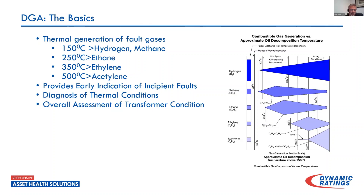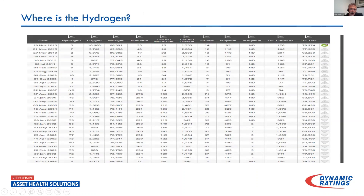Acetylene is often associated with arcing — that's generally the first thing people go to in DGA reports. But acetylene is not necessarily always arcing; it can be a thermal condition, and I have some examples of that. DGA indicators do provide early indication of incipient faults, allow us to do some diagnosis of thermal conditions occurring, and give a good overall assessment of transformer health. This is not the only thing — for true health you'd have to look at LTCs and bushings — but for the core and coil, if I had only a single test I could run on a transformer, DGA would definitely be it.